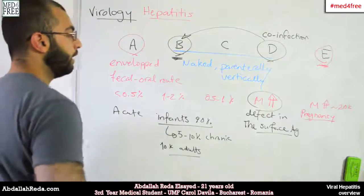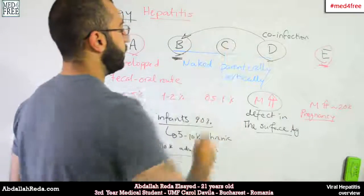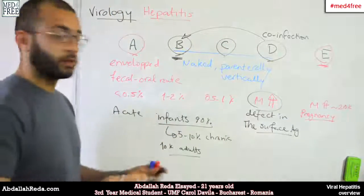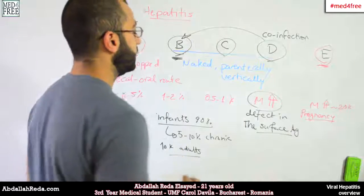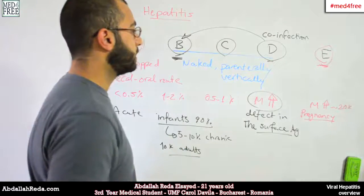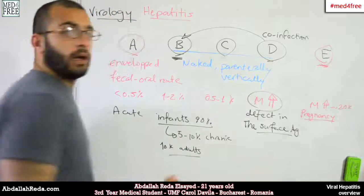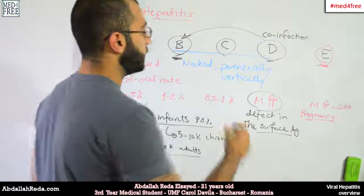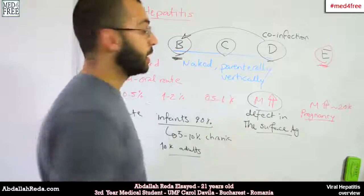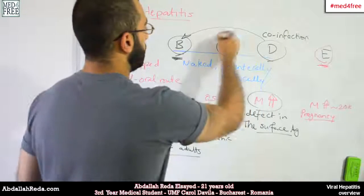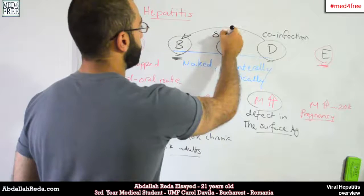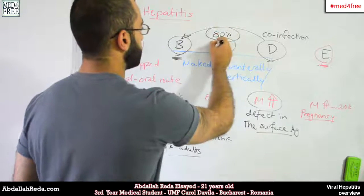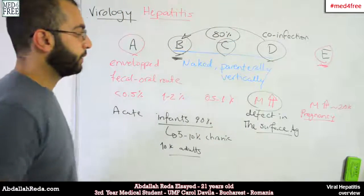Hepatitis C, on the other hand, has a higher tendency to turn chronic — you can make the correlation: C for chronic. We have around 80% of hepatitis C cases turning chronic.